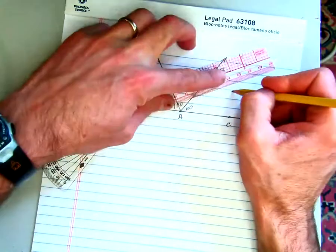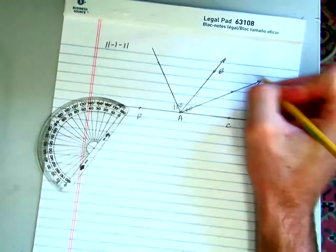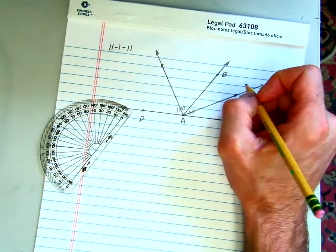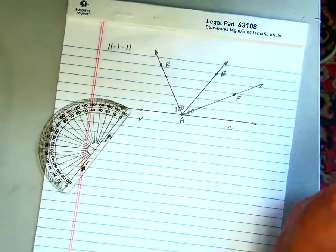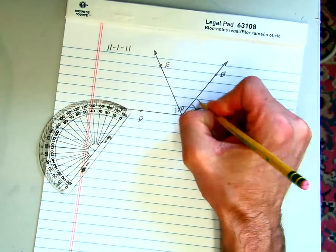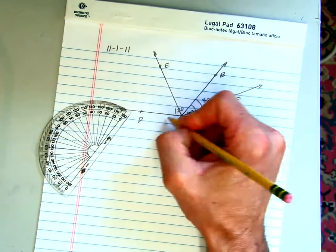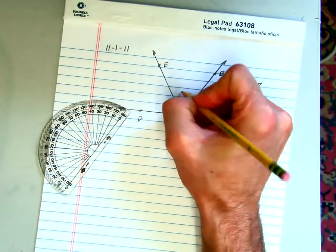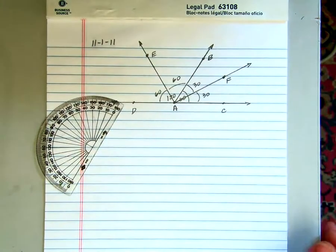These points are given letters E and F. Since this was 60 to begin with, then this angle here would just be 30 and this angle would be 30. Since this was 120 to begin with, this angle would be 60 and this angle would be 60 as well.